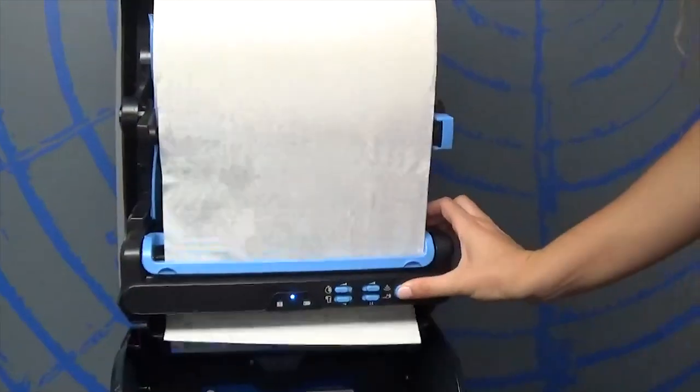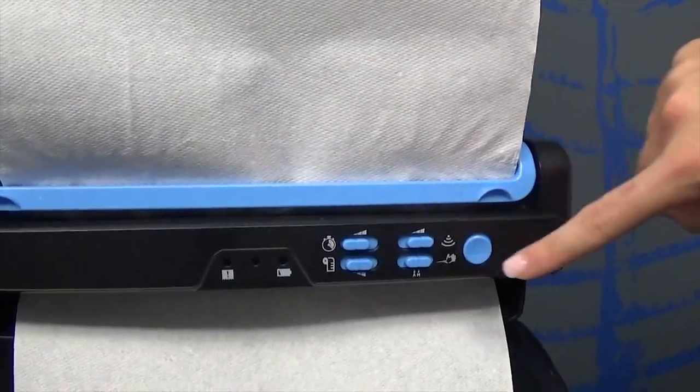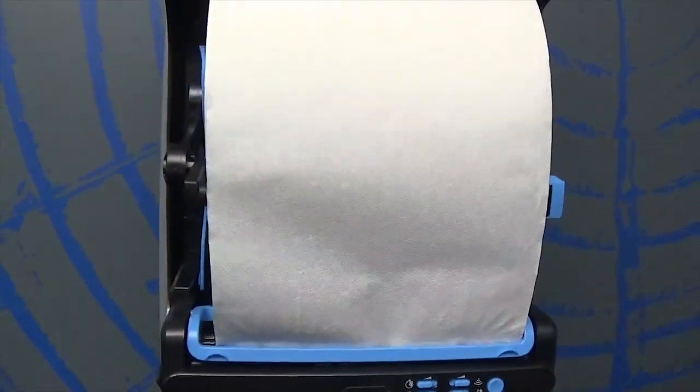You'll notice the adjustable settings: delay timing, sheet length, auto hang, sensor range, and the sheet feed button which allows for manual dispenser rolls.